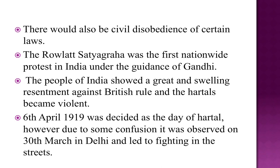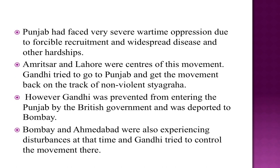The Rowlatt Satyagraha was the first nationwide protest in India under the guidance of Gandhi. The people of India showed great and swelling resentment against British rule and the hartaals became violent. The 6th of April 1919 was decided as the day of hartaal. However, due to some confusion, it was observed on 30th March in Delhi and led to fighting in the streets. Punjab had faced very severe wartime oppression due to forcible recruitment and widespread disease. Amritsar and Lahore were centers of this movement. Gandhi tried to go to Punjab to get the movement back on the track of non-violent Satyagraha.